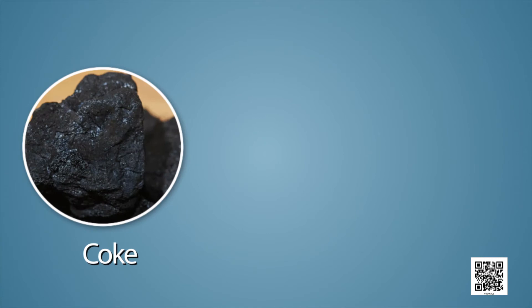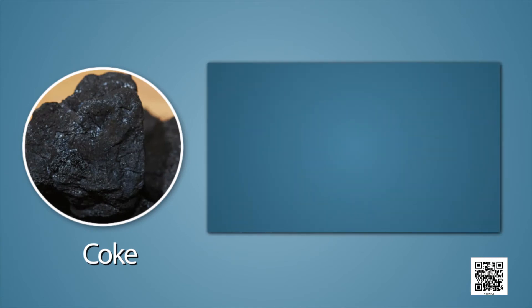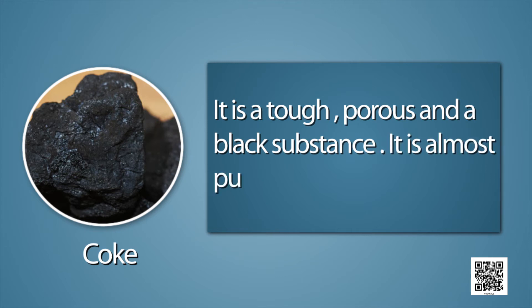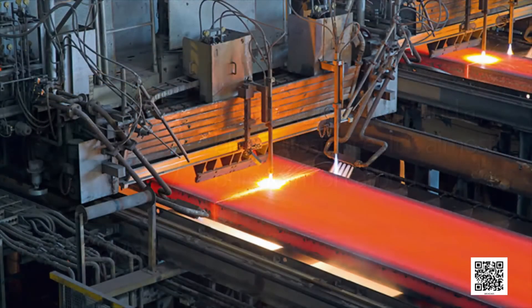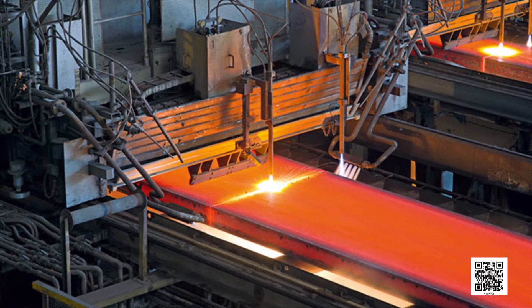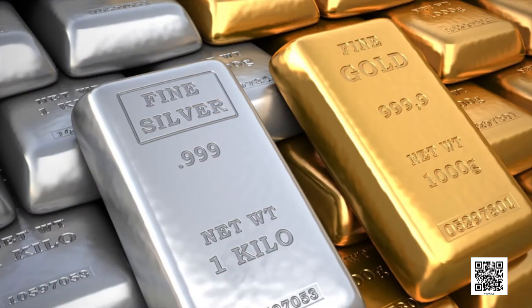Let us study about coke in detail. It is a tough, porous and black substance. It is an almost pure form of carbon. Coke is also used in the manufacturing of steel and in the extraction of many metals.